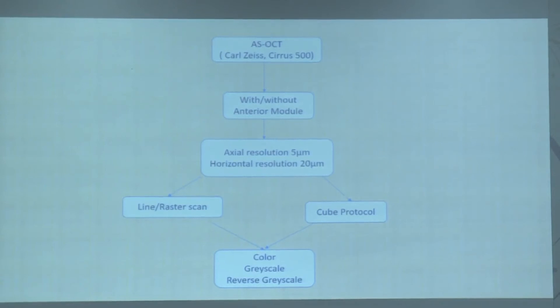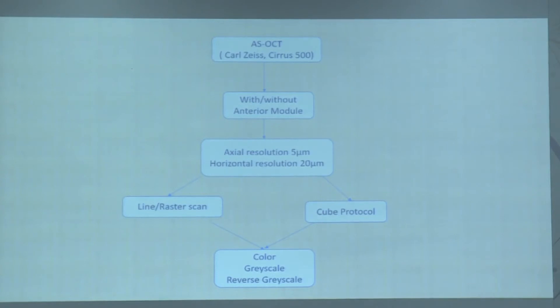The ASOCT module we used was Carl Zeiss, with axial resolution of 5 micrometers and horizontal of 20 micrometers. We used line and raster scan as well as the true protocol. We used three color maps: color, grayscale, and reverse grayscale.